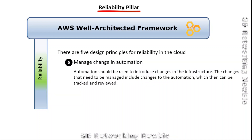Manage change in automation: automation should be used to introduce changes in the infrastructure. Changes that need to be managed include changes to automation itself, which can be tracked and reviewed.